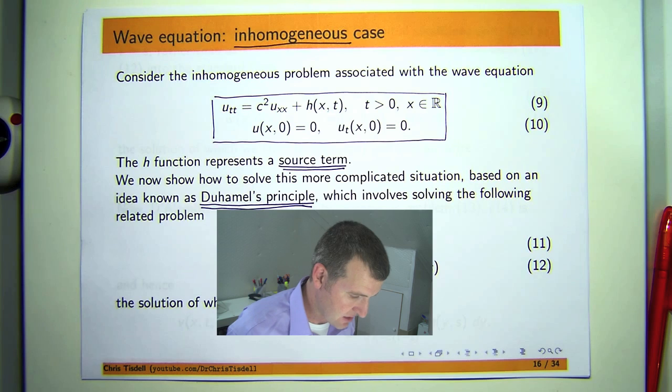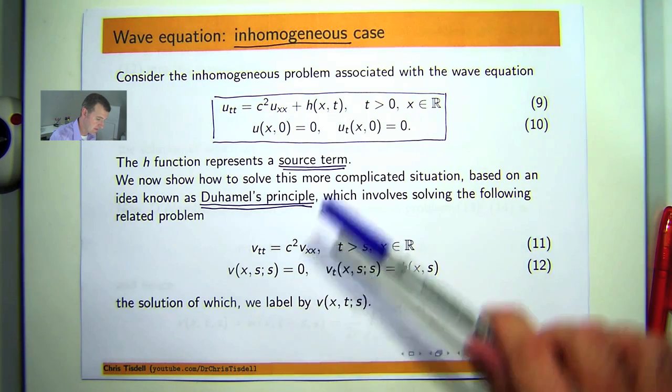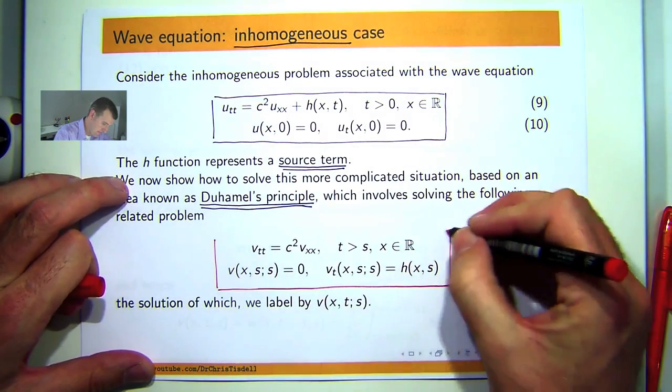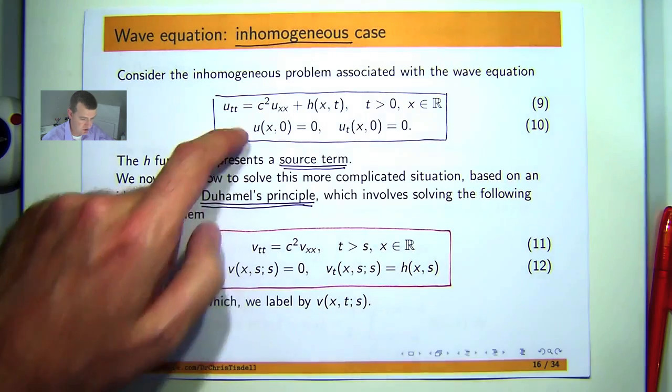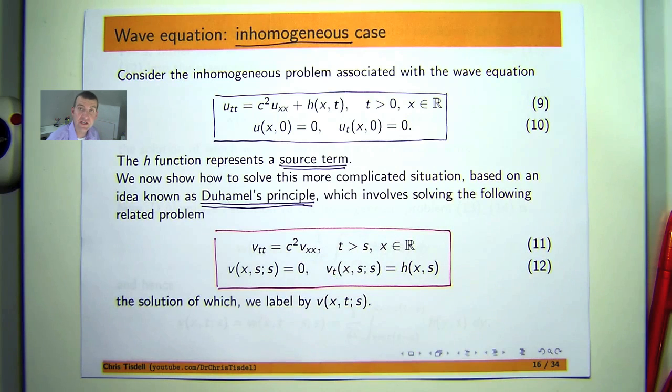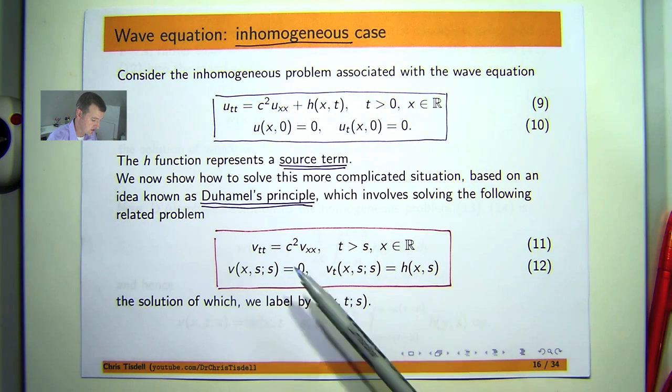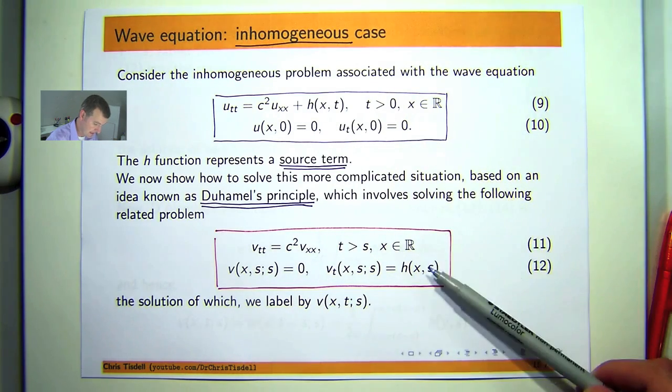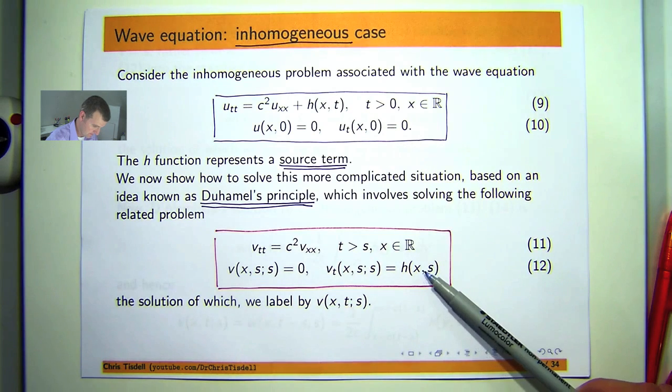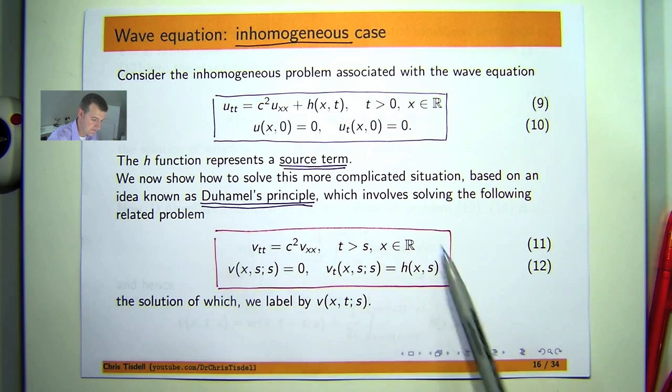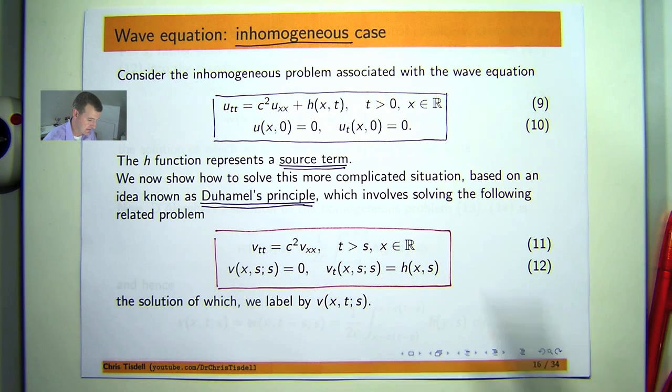All right. So we're going to solve a following problem that is related to nine and ten. So let's just compare these two problems and see how they relate and how they differ. Firstly, you can see 11 is a homogeneous wave equation in one spatial dimension. This condition is the same. The initial velocity has changed. So the H has sort of come from up here and gone down here. Now also note that the initial starting point for this problem is actually at this parameter, T equals S, where S is the parameter.